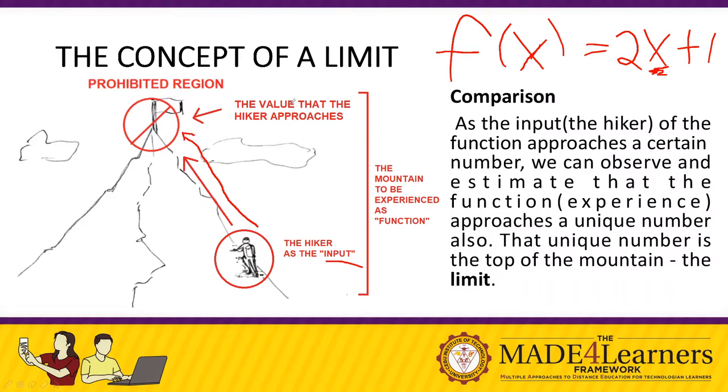This prohibited region is the value that the hiker approaches. Let's say this value is a certain number c. This number c is something that the value of x, the hiker, approaches to, but it will not actually reach it. The hiker, the experience that the hiker gets, is actually the function. The mountain to be experienced is the function. In other words, we can say that as the input, the hiker of the function approaches a certain place, the prohibited region, a certain number, we can observe and estimate that the function, or estimate the experience as it approaches this unique number also.